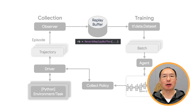the transition data are added to a circular buffer called the replay buffer. Then, during training, instead of using just the latest transition to compute the loss and the gradient, we compute them using a mini-batch of transitions sampled from the replay buffer.